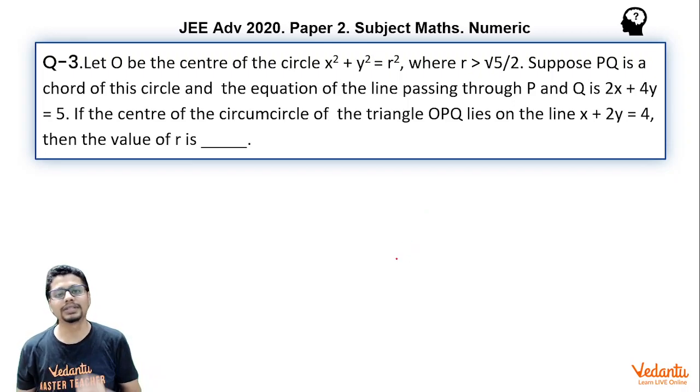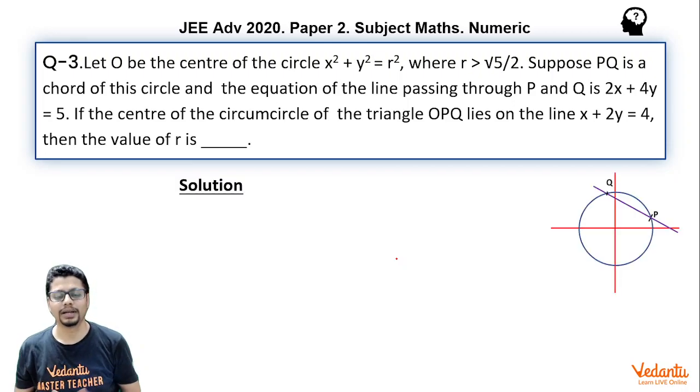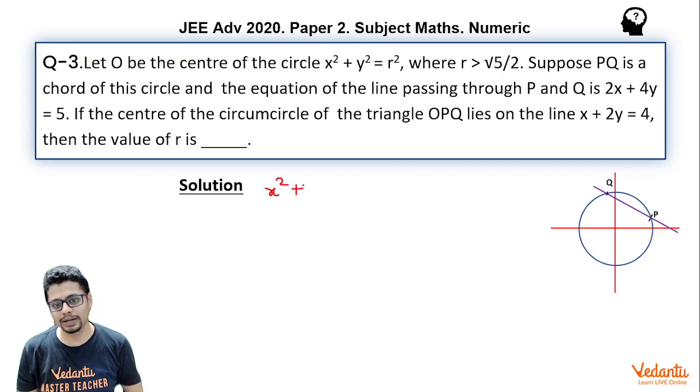This is a single digit integer type question based on the concept of family of circles. The circumcircle of triangle OPQ is a circle passing through the points of intersection of the circle x² + y² = r² and the line 2x + 4y = 5. The equation of a general circle passing through the point of intersection of the circle and this line can be written as x² + y² - r² + λ(2x + 4y - 5) = 0.